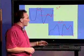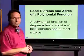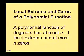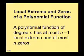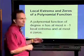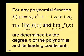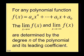This leads us to the theorem on local extrema and zeros of a polynomial function: a polynomial function of degree n has at most n minus 1 local extrema and at most n zeros. The end behavior of any polynomial function — the limit as x goes to infinity and as x goes to negative infinity — is determined by the degree n and the leading coefficient.